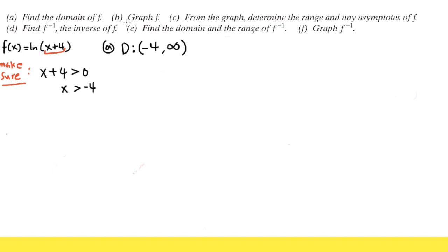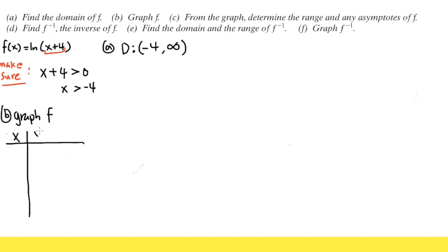Next, we are going to graph the function for part B. We are going to graph the original, and to show you, I am going to make a table. We will choose some x values, and the y values come from f of x, which is ln of x plus 4. The first x value I am going to use is negative 4, chosen because of the number inside the function.